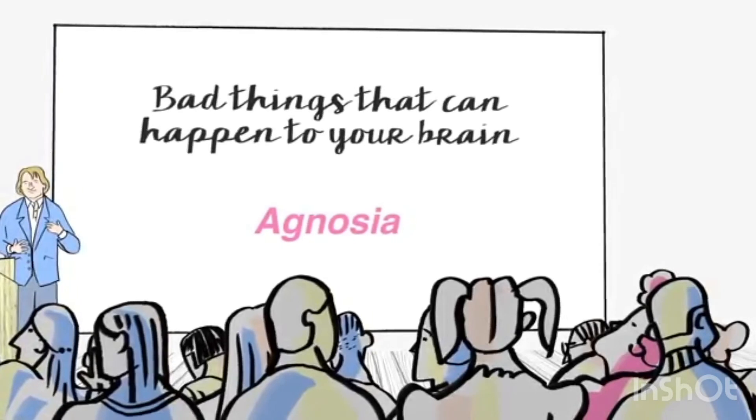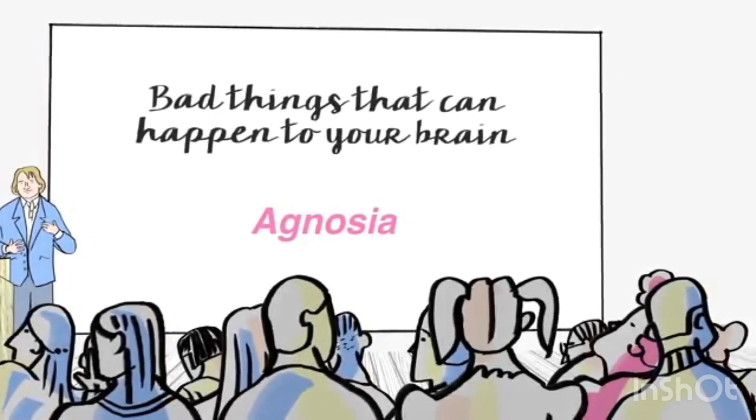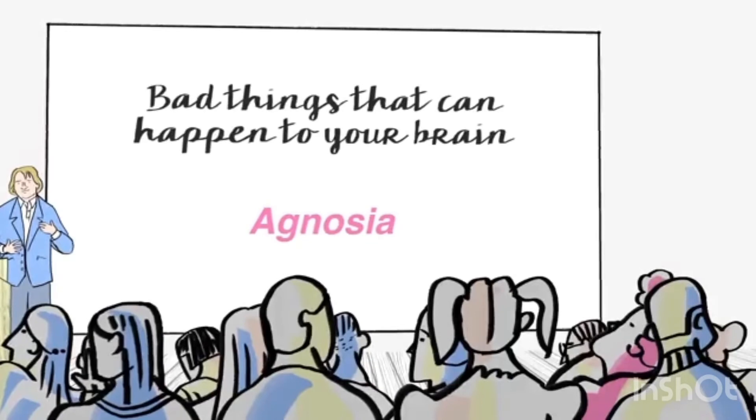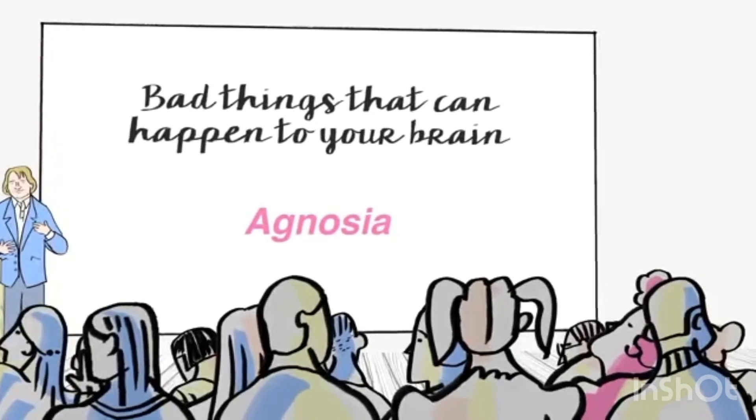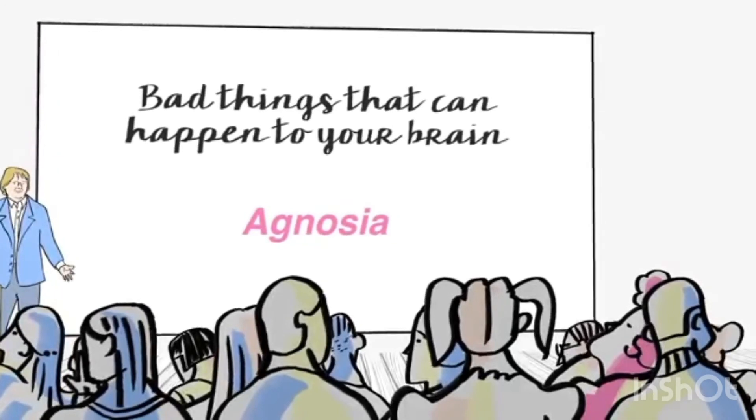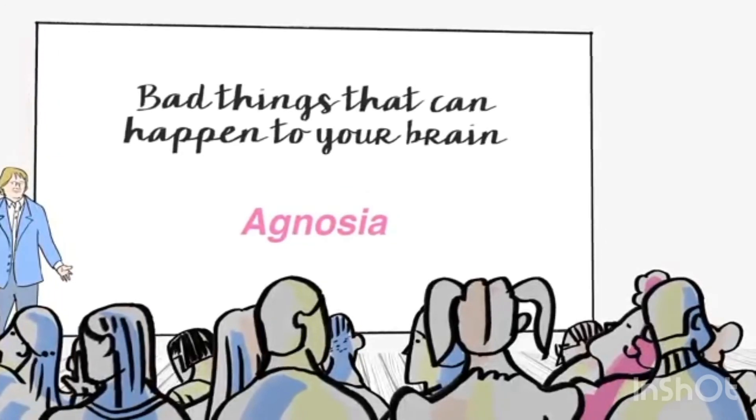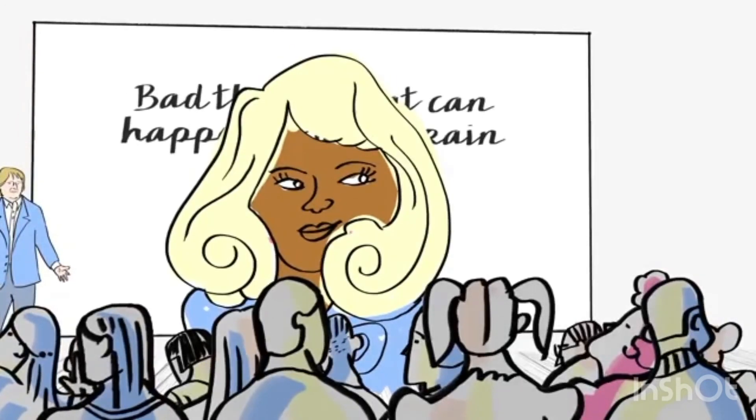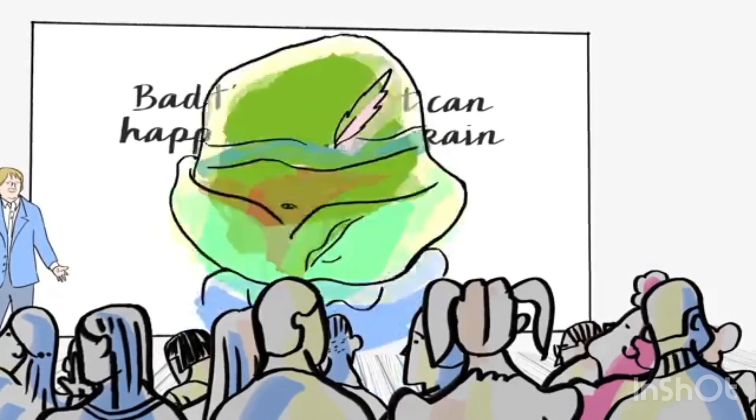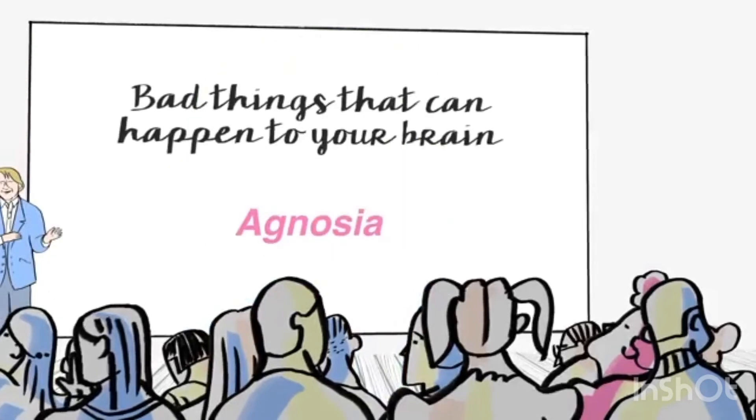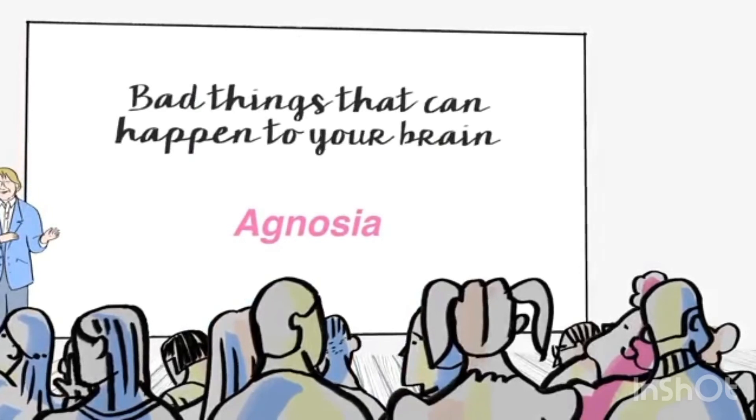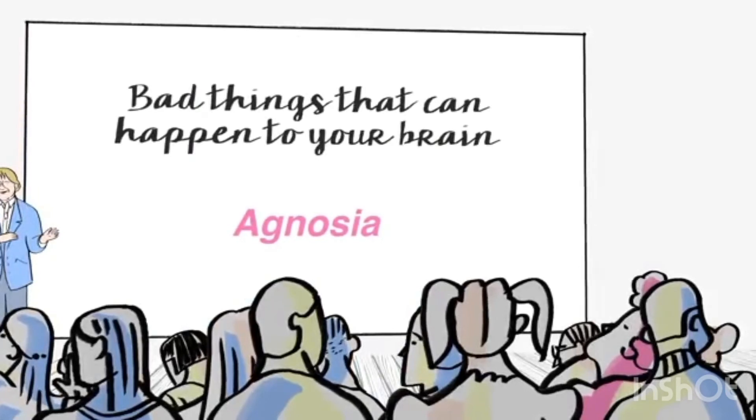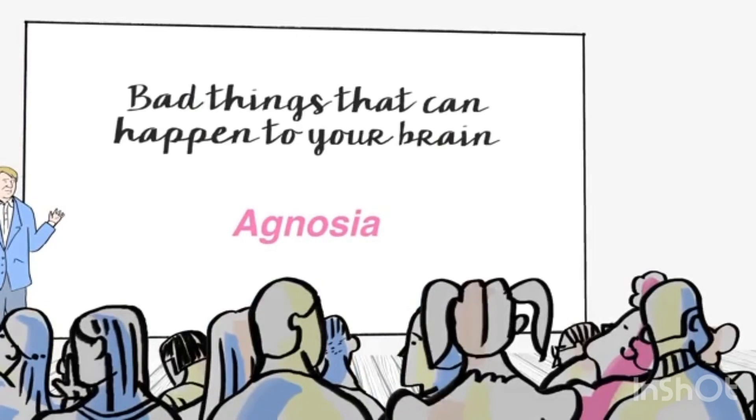You get disorders that block out one part of the world. You might have damage to parts of your brain that would block out the left side of the world. It's not just a sensory physical thing. When you ask somebody with such a disorder to draw a clock, for instance, they put all the numbers from 1 to 12 on the right side of the clock. It's as if they don't think the left side of the world exists.